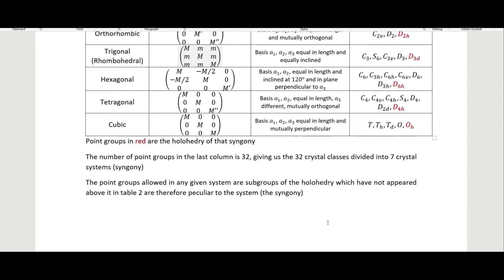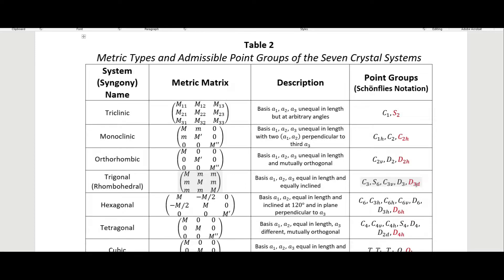The hemihedri is essentially formed by taking the holohedry and removing symmetry elements, reducing it down step by step. For example, only these point groups would still represent the trigonal or rhombohedral symmetry of the lattice. So if we have D3d and then remove some diagonal reflection planes, we get D3. We can then remove the C2 axial rotations perpendicular to the principal axis to get C3v, and then remove the vertical reflection planes to bring us down to C3. By removing symmetry elements from the holohedry we get down to our hemihedri.